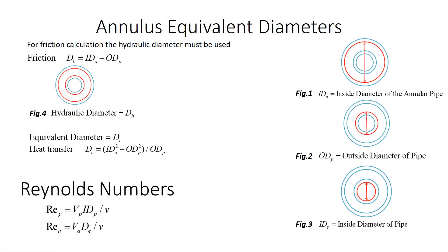For the annulus equivalent diameter, we must first see the inside diameter of the annular pipe, which is figure one. Figure two shows the outside diameter of the pipe, and figure three shows the inside diameter of the pipe.